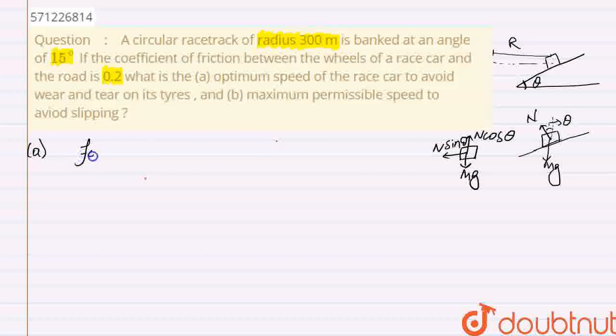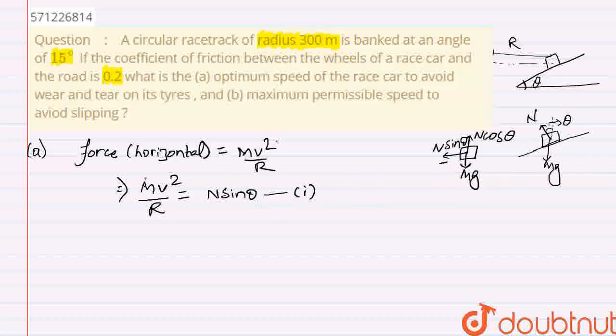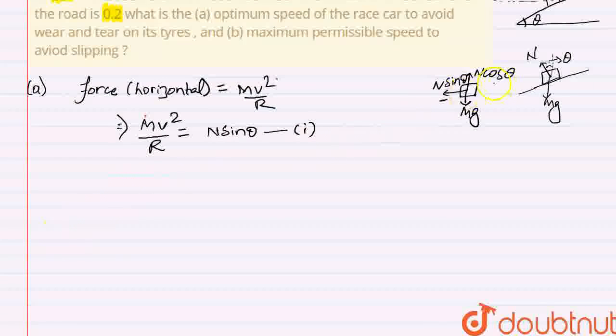And the force in horizontal direction, that will be equal to what? This force will supply the centripetal acceleration, that is M v square upon R, the centripetal force. So thus you can say M v square upon R will be equal to N sin theta. Consider this as equation first. Then for the second, that is for y axis, you can say that mg will be equal to N cos theta. Consider this as second equation.